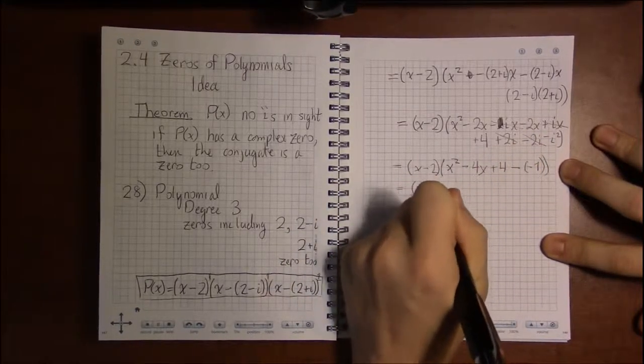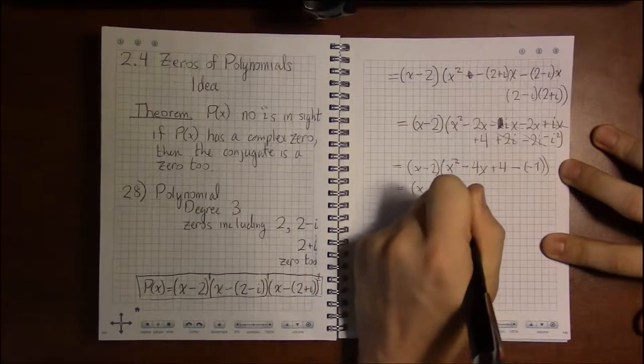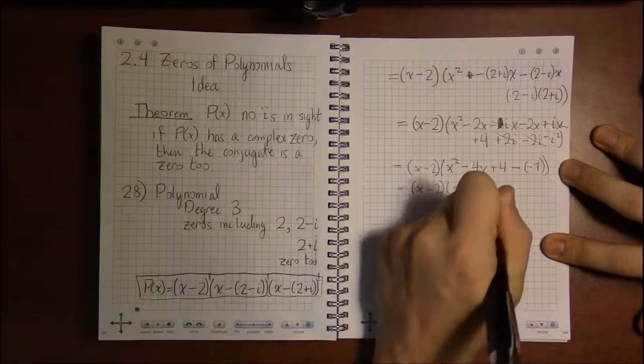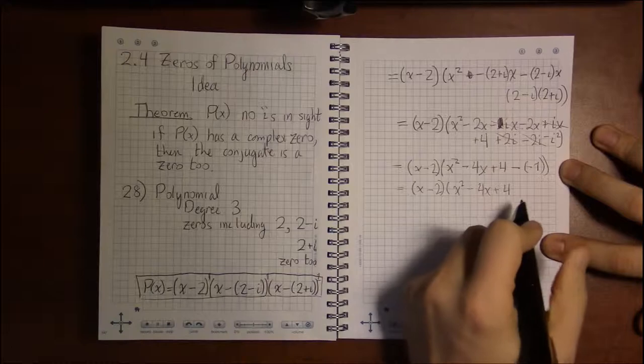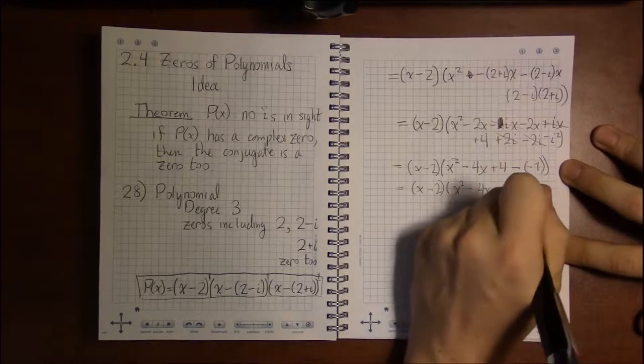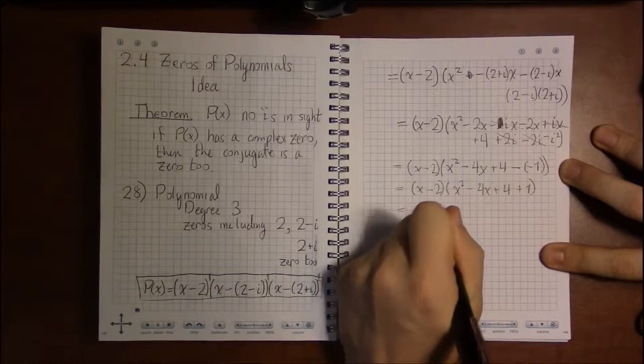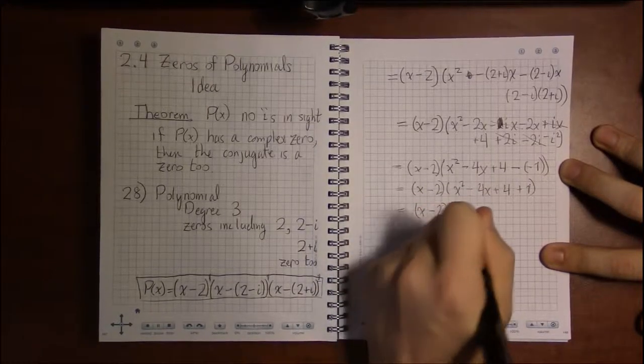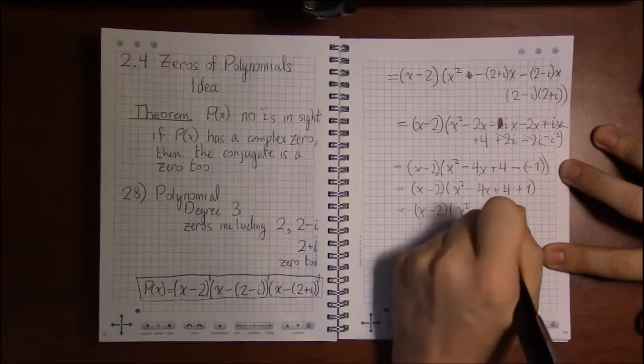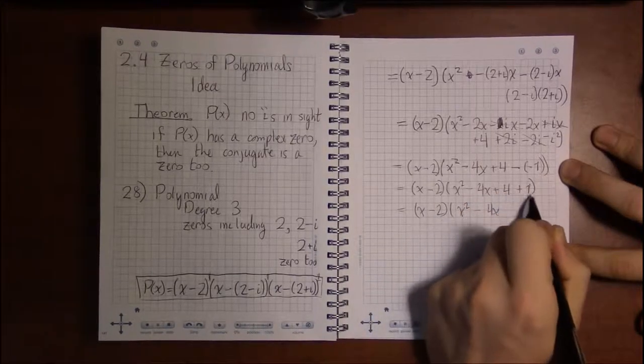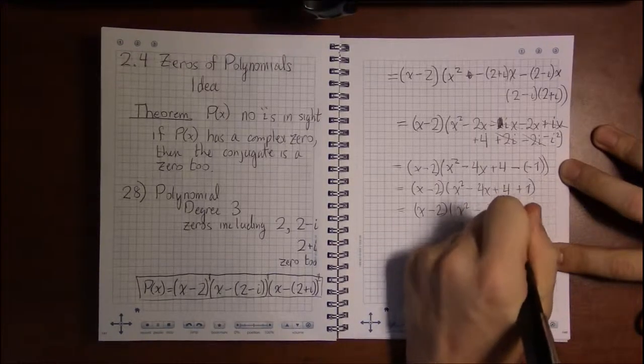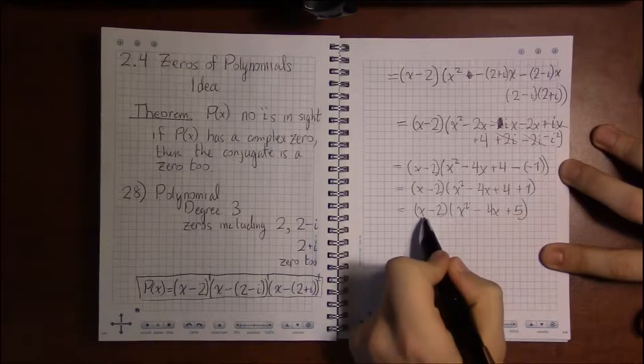So we have (x-2), let's see, then x²-4x+4, and minus times -1 is +1. Then (x-2) times (x²-4x), 4+1 is +5.